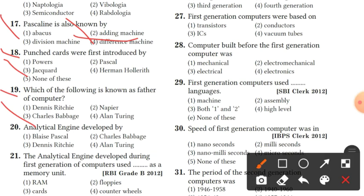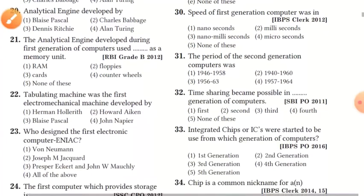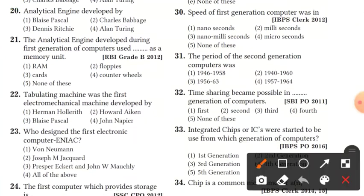Question 20: the analytical engine was developed by Charles Babbage. Option 2 is the right answer. Question 21: the analytical engine used counter wheels as a memory unit. Option 4, counter wheels, is the right answer.